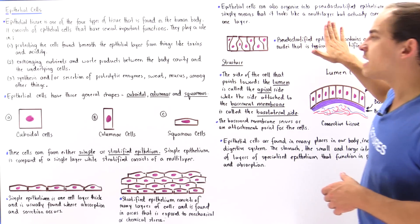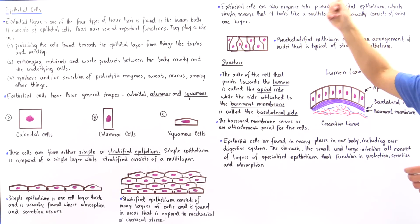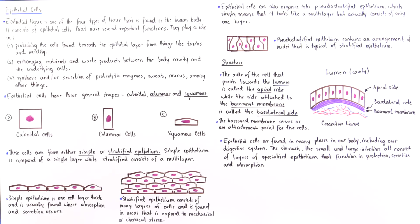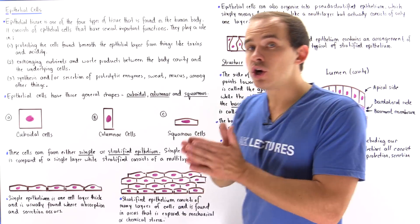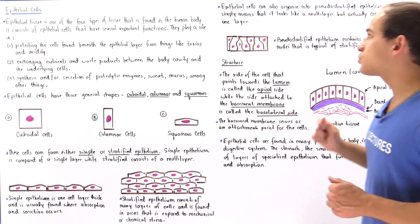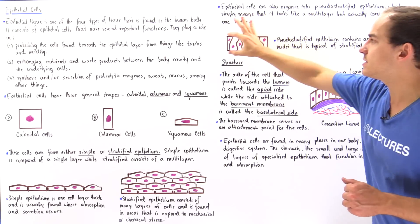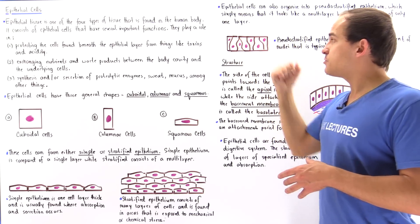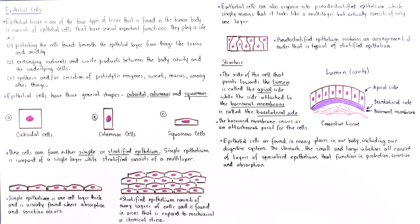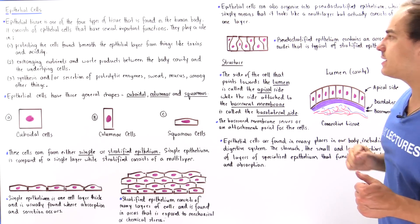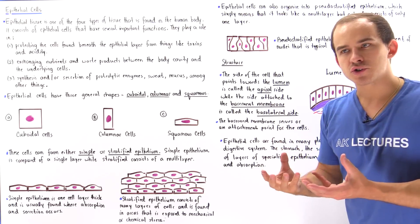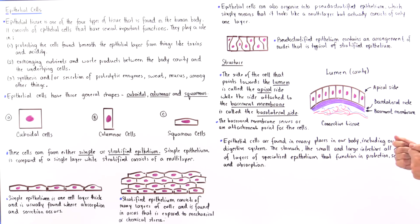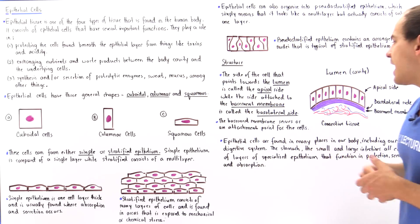A third type of epithelium is known as pseudostratified epithelium. This basically means that our layer of cells looks like it's multi-layered but it actually consists of a single layer of cells. So pseudostratified epithelium contains an arrangement of nuclei that resembles the typical arrangement found in stratified epithelium, but it actually consists of a single layer. Now let's move on to structure and discuss the several components of our epithelial cells and epithelium.